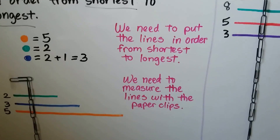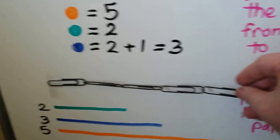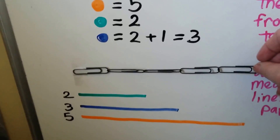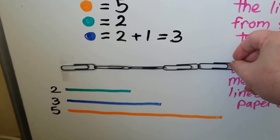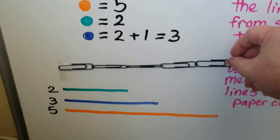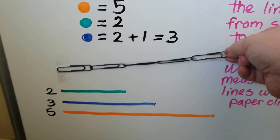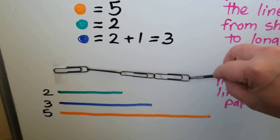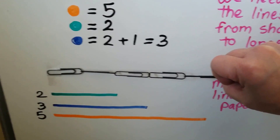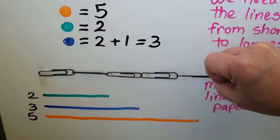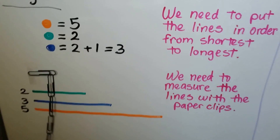We use our paperclip measuring tool — if you saw the previous videos, you saw how we made this — and we put them in order from shortest to longest. The green one is the shortest at 2 paperclips long. The blue one is 3 paperclips long. And the orange one is the longest at 5 paperclips long. So we acted it out by actually doing the measuring.